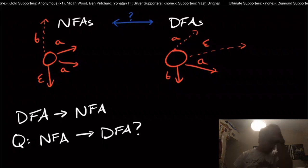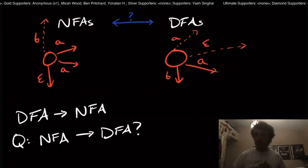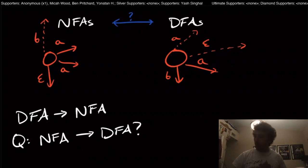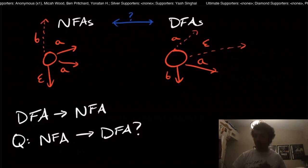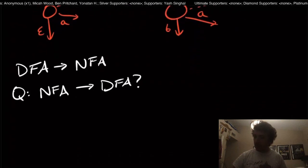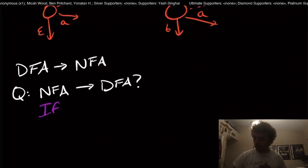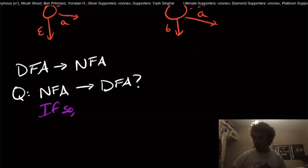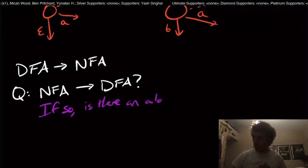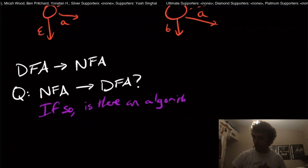So what we want to be able to do is, if there is such a relationship here, what we would need to do is to find some type of algorithm. So if there is such a process at all, is there an algorithm to do it, to actually perform the conversion?